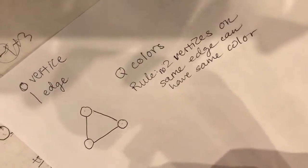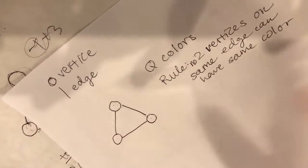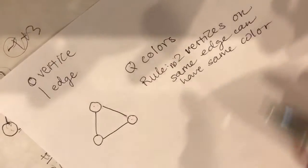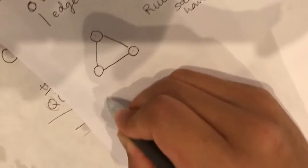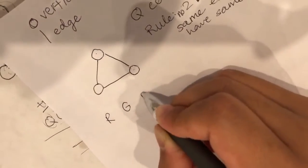Now what do we mean when we have Q colors? Q can be three colors, four colors, five colors, and so on. Well let's say we have four colors: red, green, blue, and yellow.